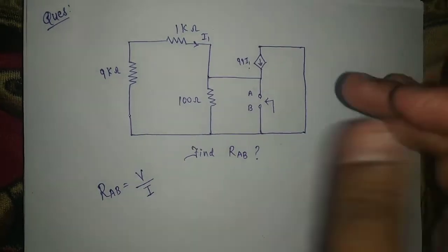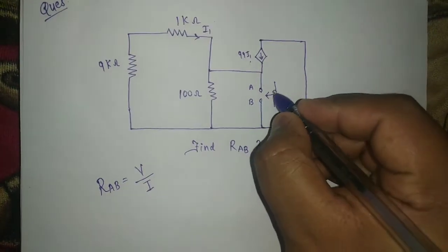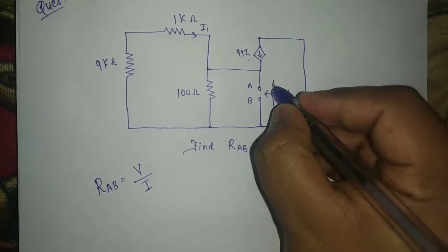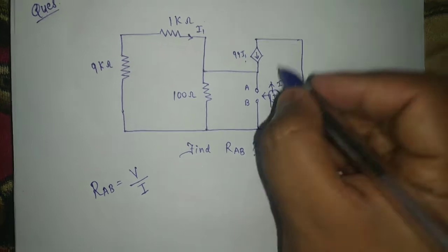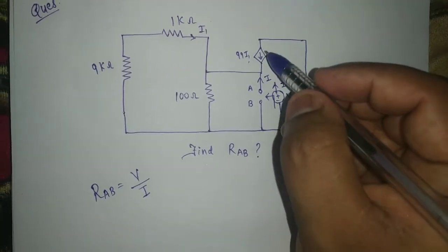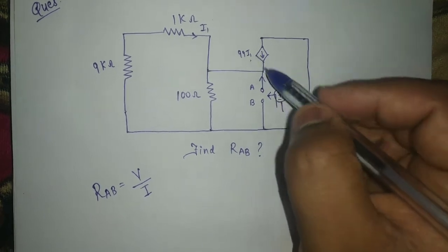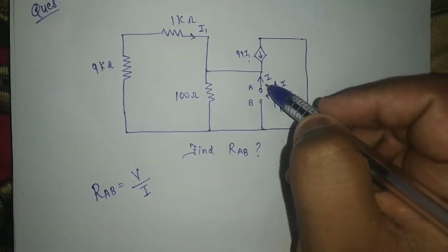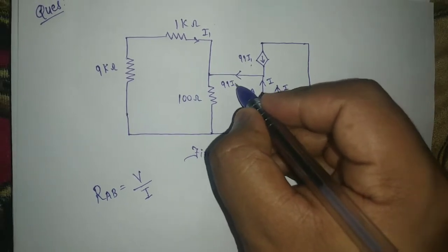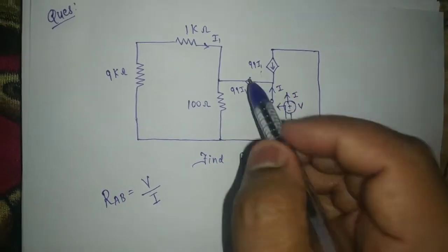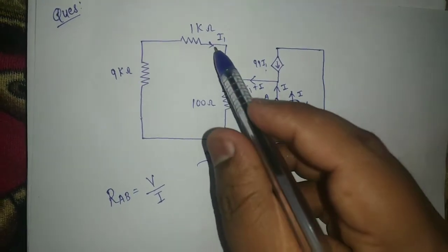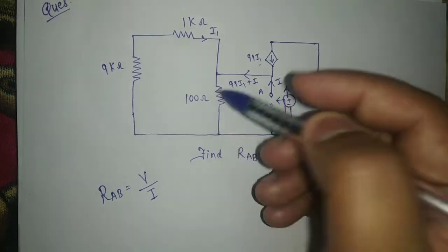Make a voltage source V and current throw is I. So current throw here is I, so incoming current 99 I1 and incoming current I, so here outgoing current is 99 I1 plus I. So here 99 I1 plus I current is going and here I1.